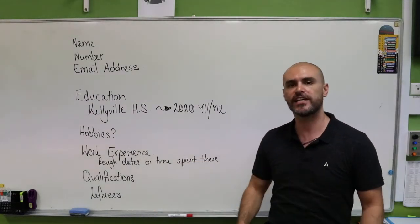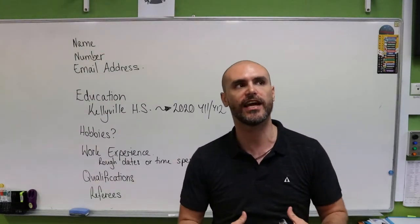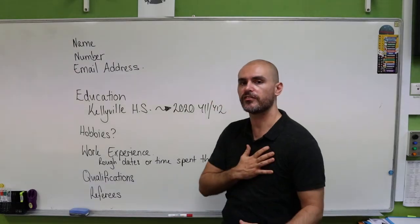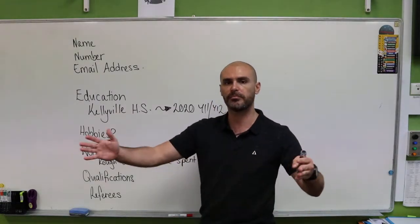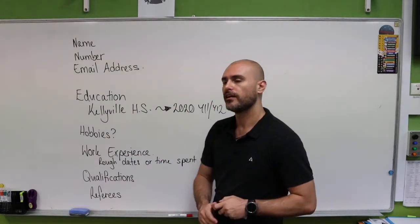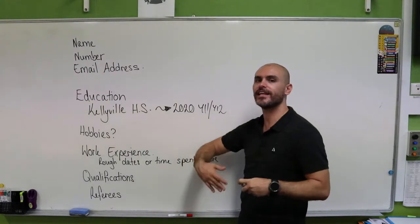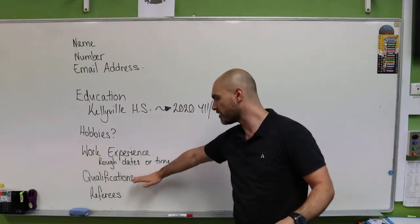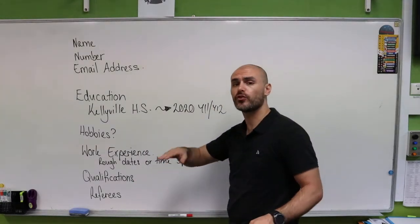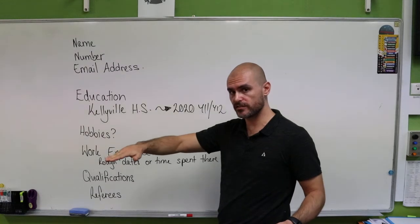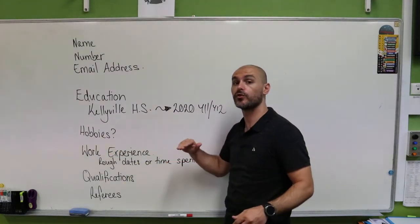Then we've got our qualifications. These are all of the certificates, the education things that we've done that we've finished. If I've completed a TAFE course, bang, that goes in there. Any other qualifications, any extra courses that you've done fit right into here. Make sure that you put the name of the place first, then the course that you've completed.